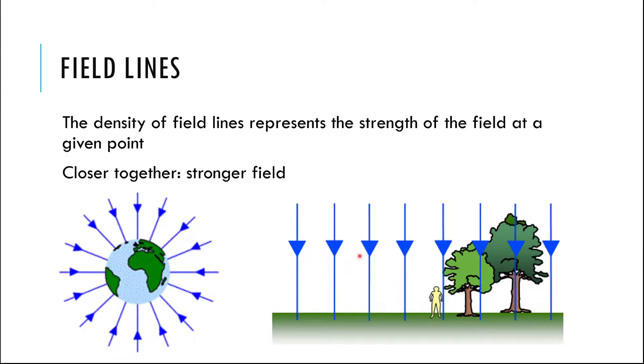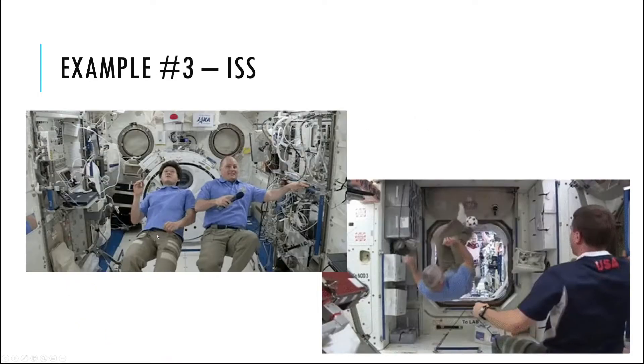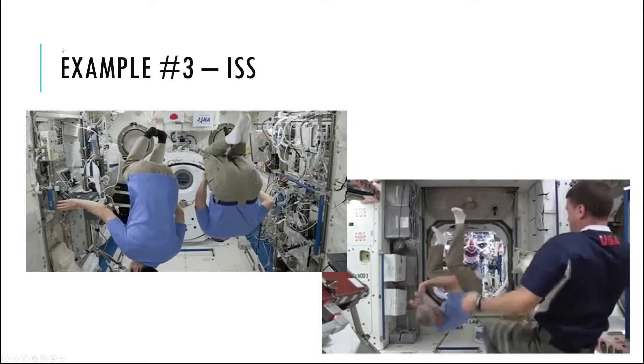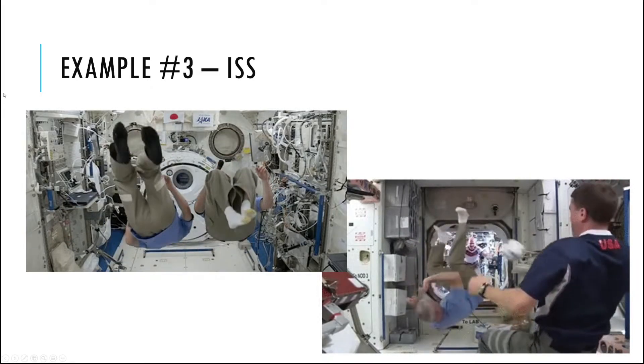The parallel lines show us it's all pointing down and that the field is not any weaker or stronger at the top of a tree than it is at the bottom, not realistically. You have to get pretty far out before you start noticing that the field lines are spreading out because the planet is curved. All right, so that's how we draw these field lines, and it's a good way to visualize what's going on with the field.